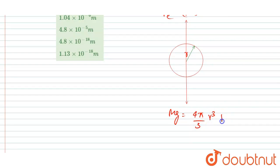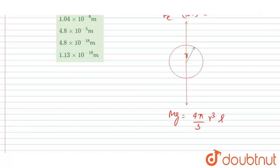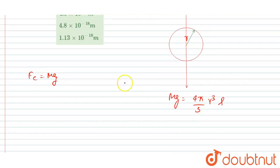That is 4π/3 r³ into ρ oil, which is given in the question. So it is said that this electrostatic force is balancing the mg, so I will write Fe equals mg. Now you can put the values here. So 10e into electric field equals 4π/3 r³ into ρ oil.